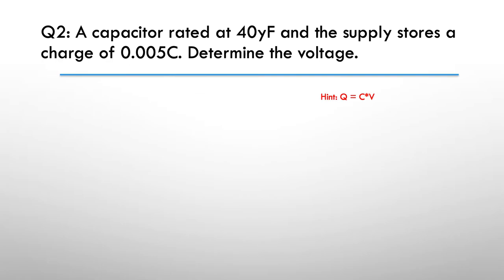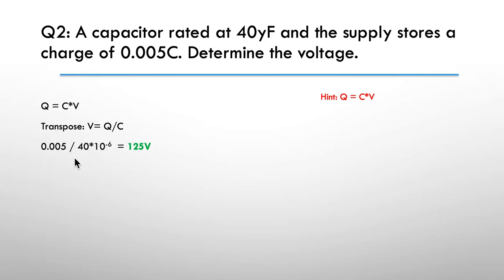Hint: Q equals C times V again. This time we transpose the equation and make V the subject of the formula, so V equals Q divided by C. We take our Q at 0.005 coulomb divided by 40 times 10 to the minus six — that converts into farads — and you'll find it comes to 125 volts.